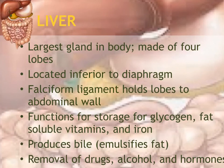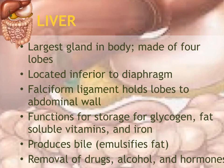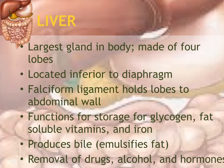The liver is the largest gland or organ in the body, made up of four lobes, located just underneath the diaphragm — the wall separating the thoracic cavity from the abdominal cavity — and held in place by the falciform ligament. The liver stores glycogen (a stored form of glucose), fat, vitamins, and iron. It also produces bile, which emulsifies fat by breaking it down into small fat droplets. The liver also removes drugs, alcohol, hormones, and other toxic substances, making them non-toxic.